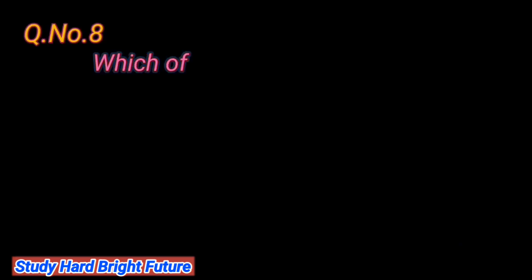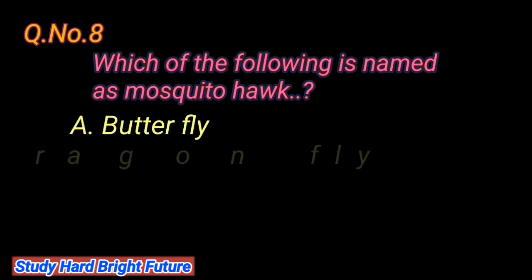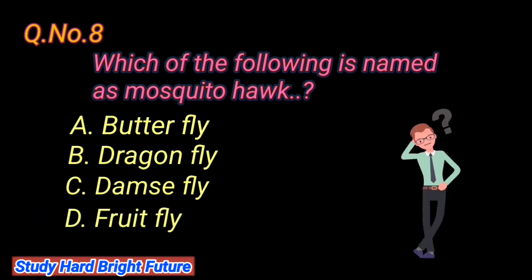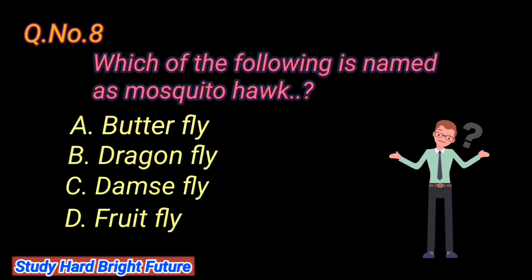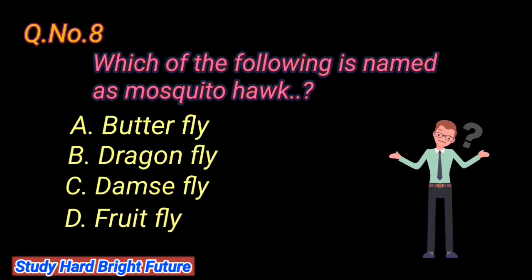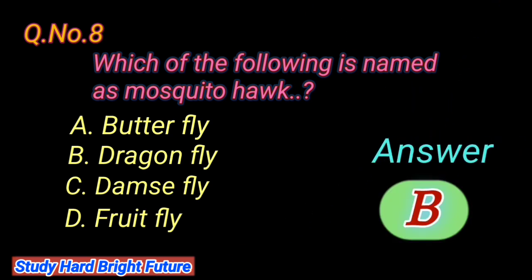Question number 8: Which of the following is named as a mosquito hawk? A. Butterfly, B. Dragonfly, C. Damselfly, D. Fruitfly. The right answer is B. Dragonfly.